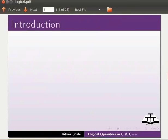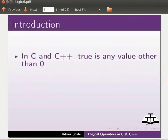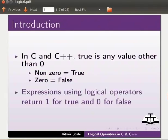Let us start with the introduction to the logical operators. In C and C++, true is any value other than 0. Non-zero means true and 0 means false. Expression using logical operators return 1 for true and 0 for false.